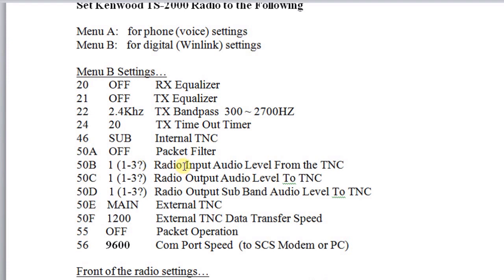50B is the radio input audio level from the TNC — this is your transmit audio level on the radio. 50C is the radio output going back to the TNC. Those are the two main ones you'll look at. 50E is the external TNC, and we want that on main, because that will be on the main radio. Item number 50F is the external TNC data transfer speed — set that to 1,200. Item number 55 is packet operation — set that to off.